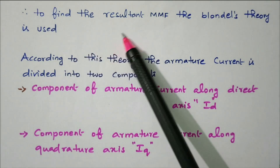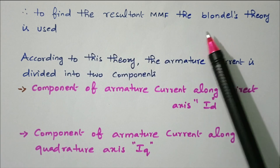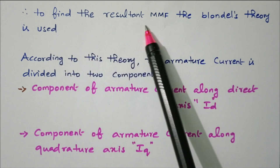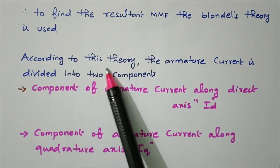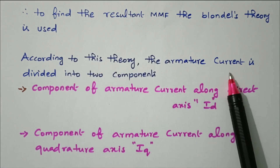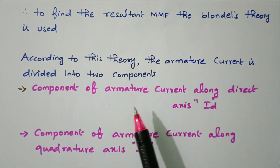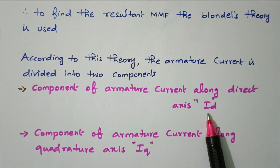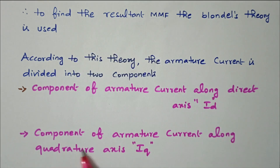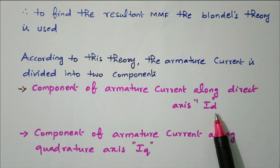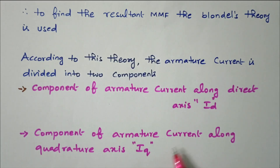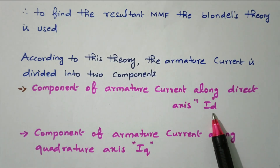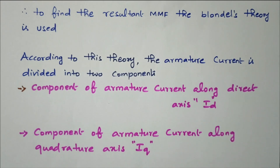To find the resultant MMF, Blondel's theory is used. According to this theory, the armature current is divided into two components: the component along the quadrature axis is Iq, and the component along the direct axis is Id. So the armature current is divided into Id along the direct axis and Iq along the quadrature axis.